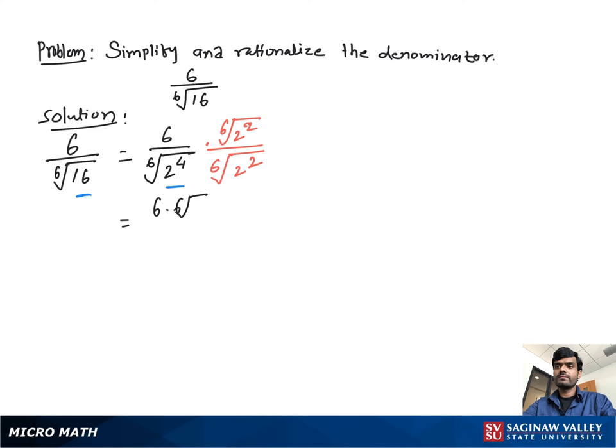Then we get 6 times the 6th root of 2 squared over the 6th root of 2 to the 4th times 2 squared.